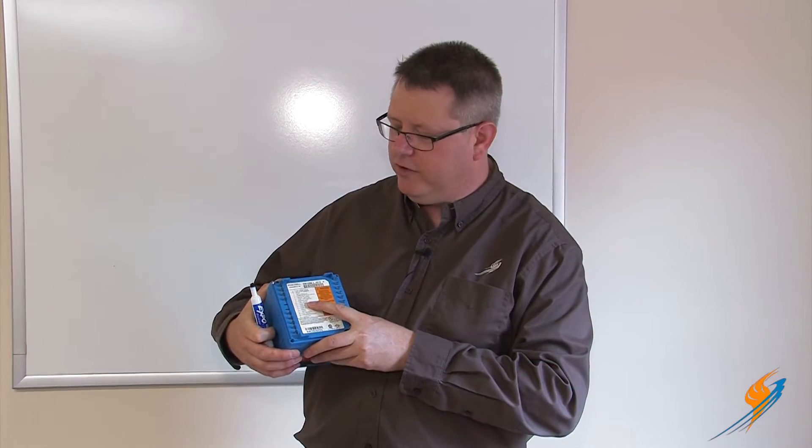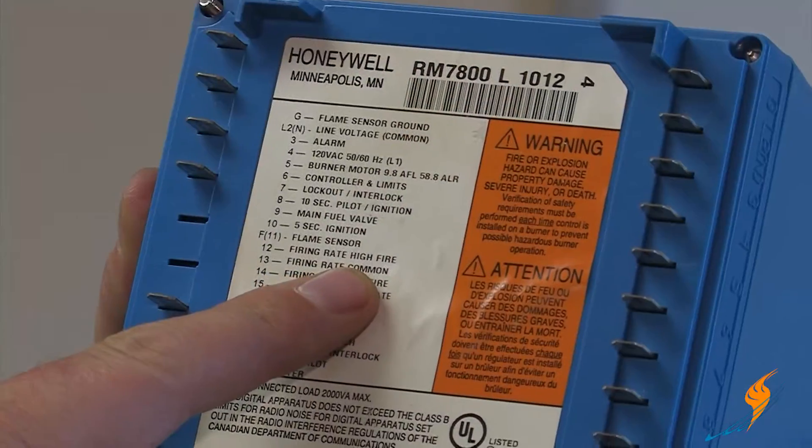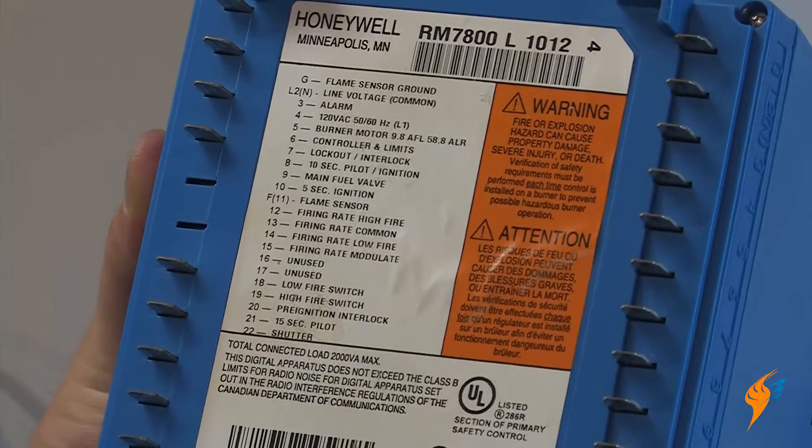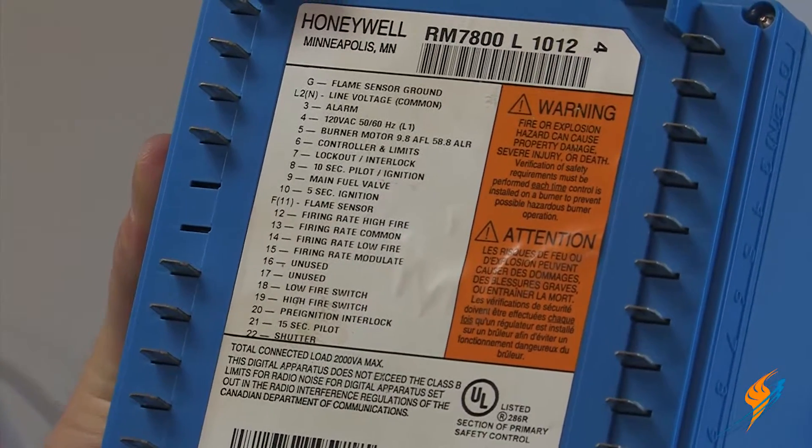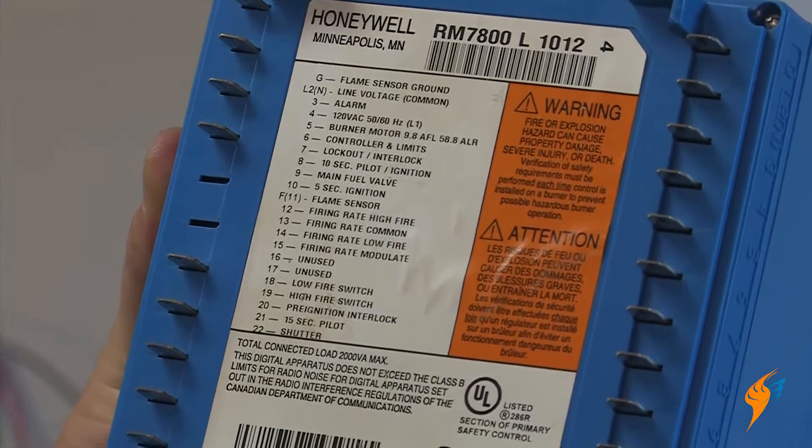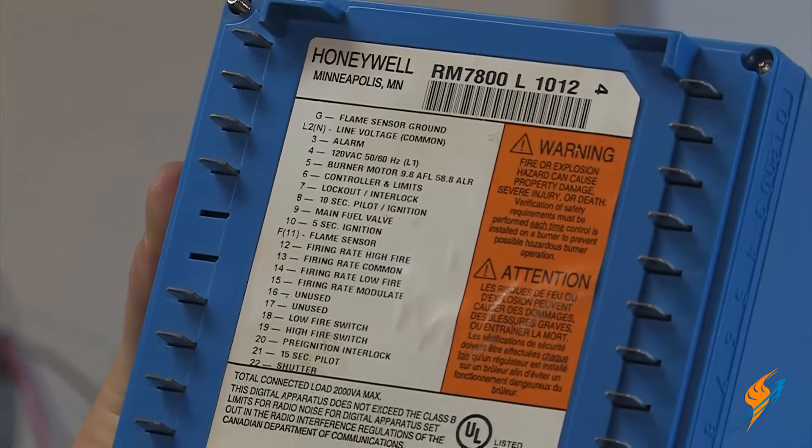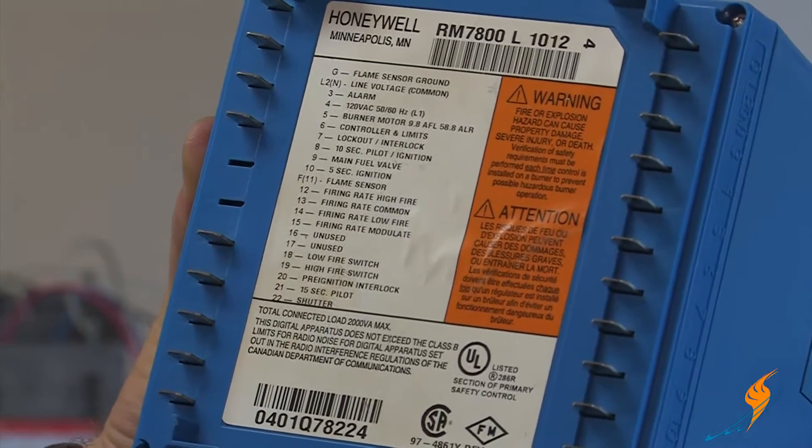The terminals it uses for that in this instance are common, low fire, high fire, and modulate terminals. So when this is commanding the mod motor to go to the high fire position, it's jumpering 12 to 13 or the common to the high fire terminal. In order to drive it to the low fire position, it's jumping the 13 to 14 terminals.